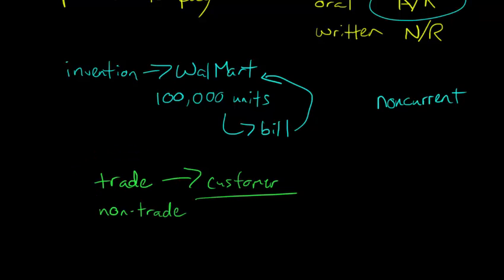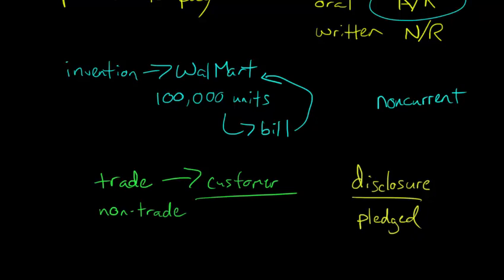Sometimes you'll see a disclosure in the notes saying that the firm has pledged some of its receivables as collateral — they're required to disclose that. So this is just an overview of some of the things you'd see in the receivables account: accounts receivable, notes receivable, trade versus non-trade, and occasionally receivables that are even pledged.